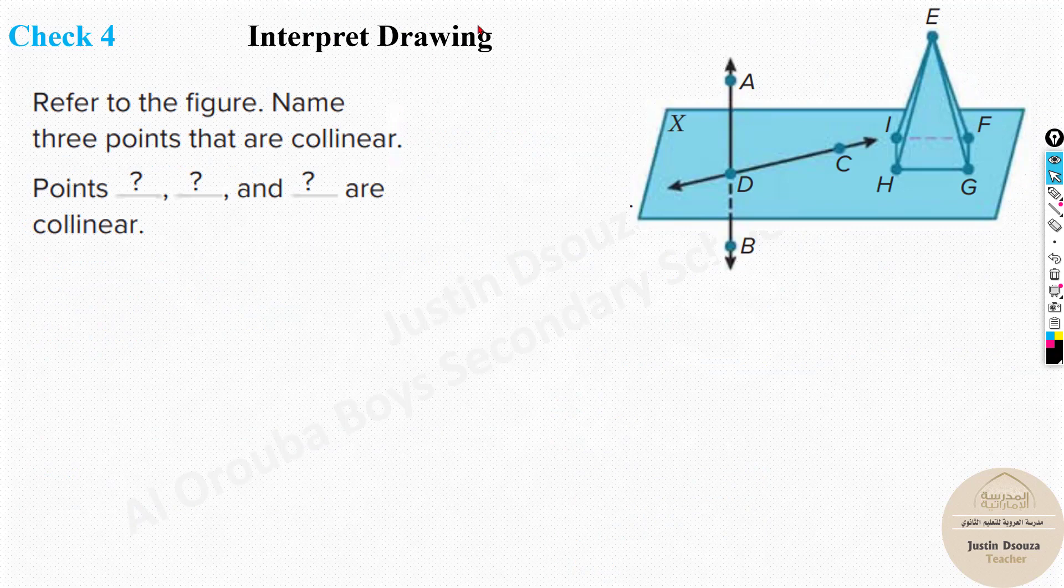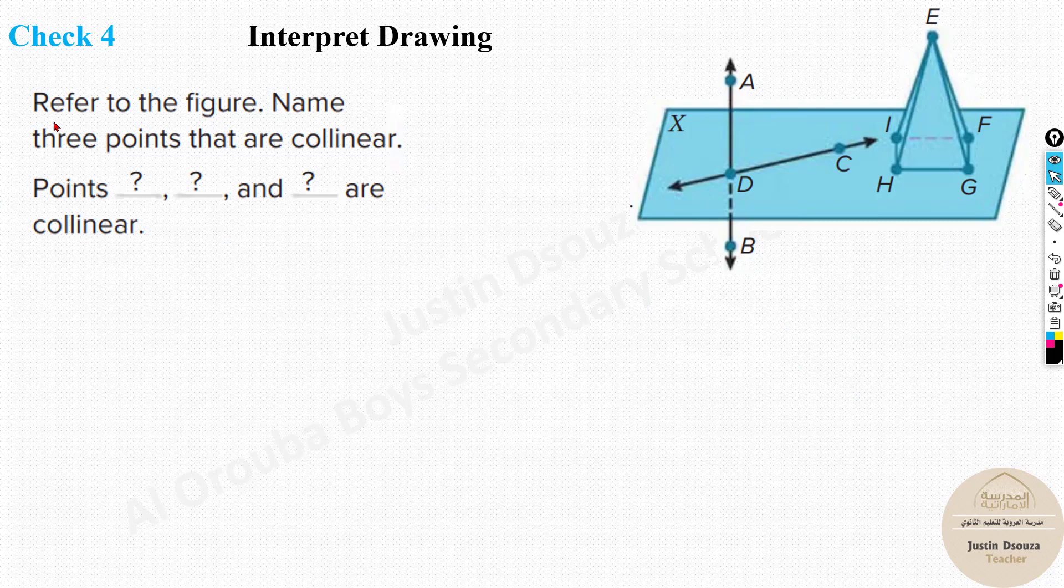And now the same thing over here. Please do try this by yourselves. Just read the problem and do it after pausing the video. I hope you have tried. Now let's look over here, reference the figure, name the three points that are collinear. Now which are the points that are collinear? Not over here. Over here we have two points. Over here two points. Over here you can see A, D, B are collinear points. They are not coplanar, but they are collinear. So it's D, A, B, or A, D, B, or B, D. However, we can write that same answers. So that's the answers over here.